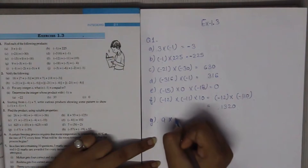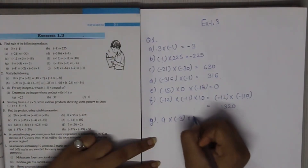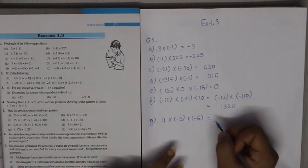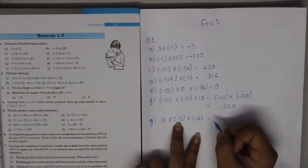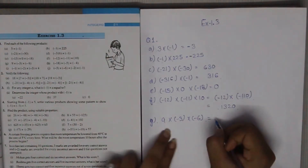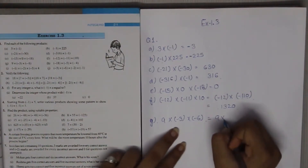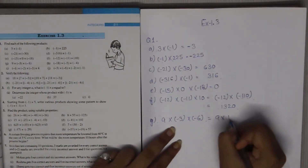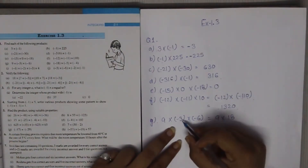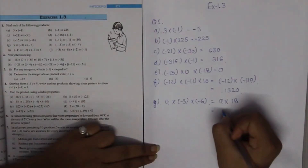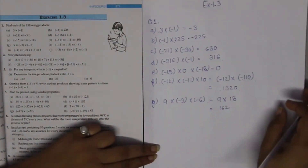9 multiplied by minus 3 multiplied by minus 6. First we multiply 9 by 3 to get 27, then by 6. Negative times negative makes it positive. The answer is 162.